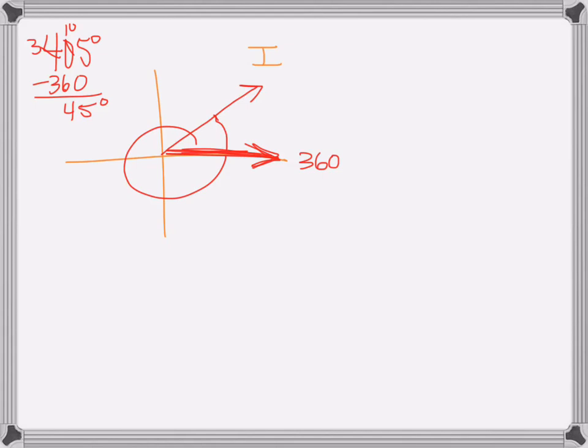I'm going to go ahead and find the reference angle. And the way I do that is by connecting this angle to the x-axis right here. It makes a right angle. And I want to know the angle inside my triangle closer to the origin. Well, luckily, we just found it right here. It's 45 degrees.